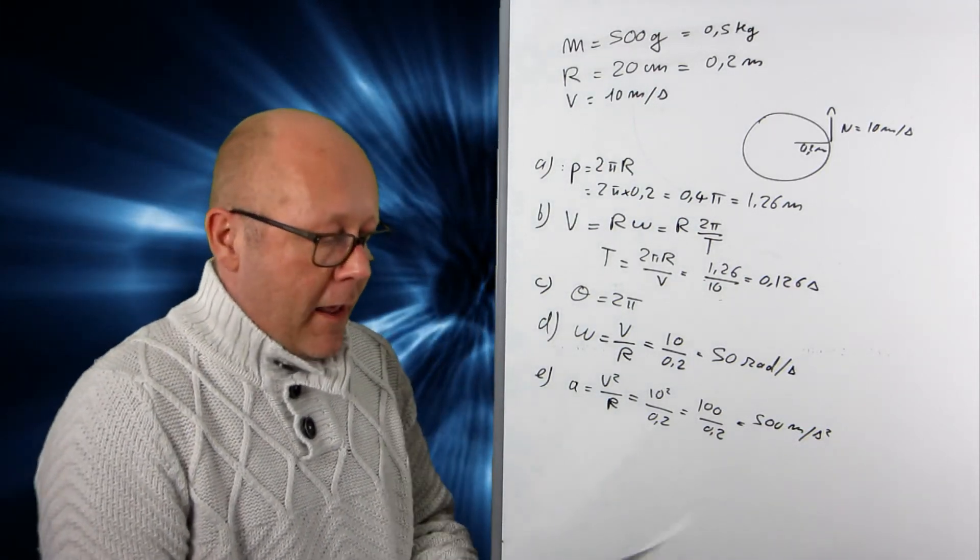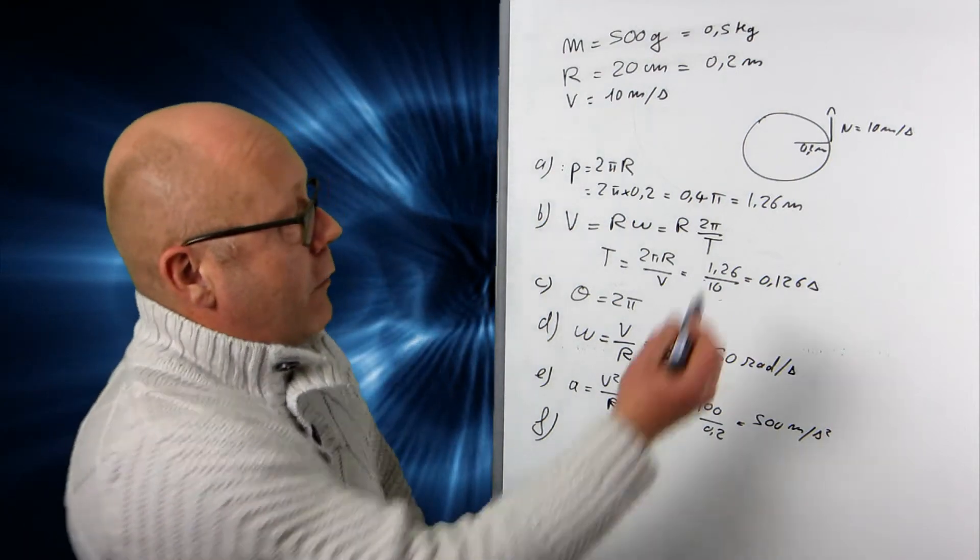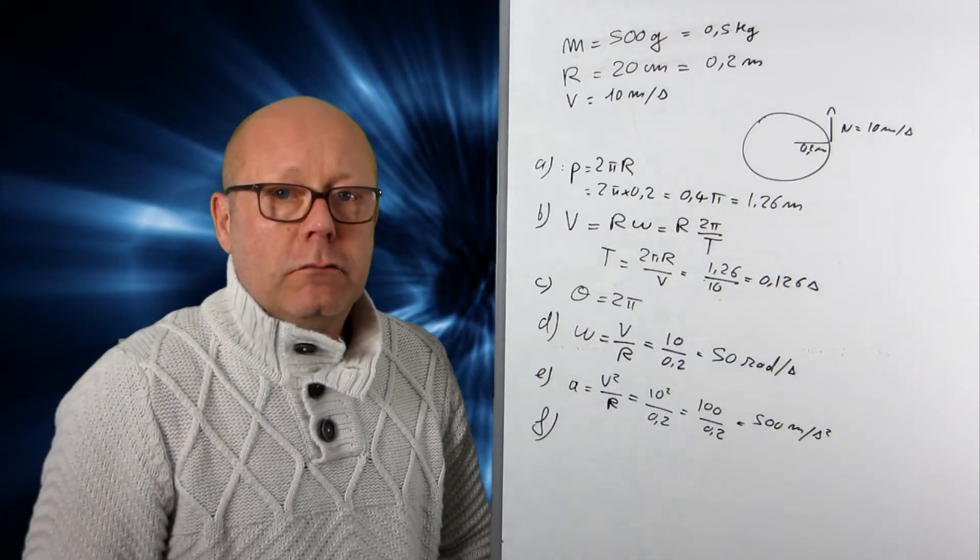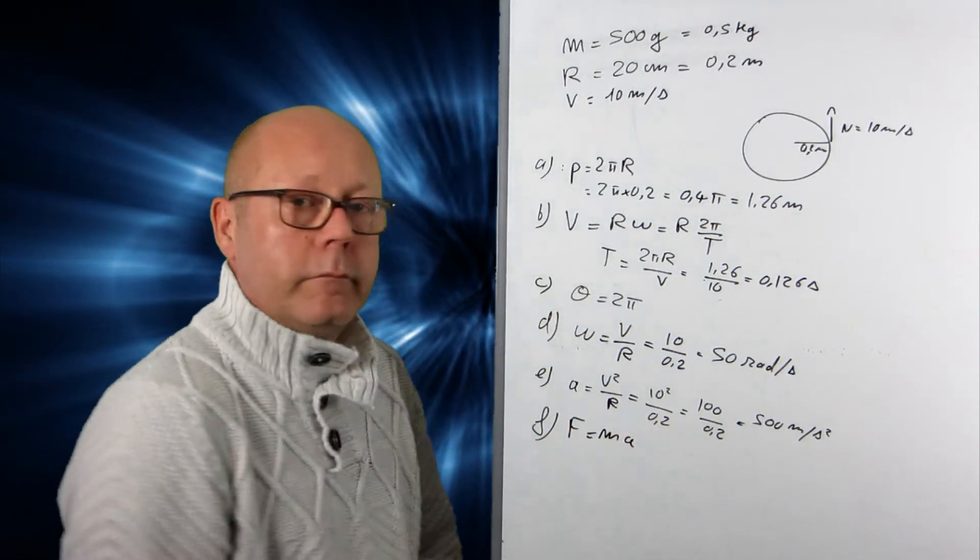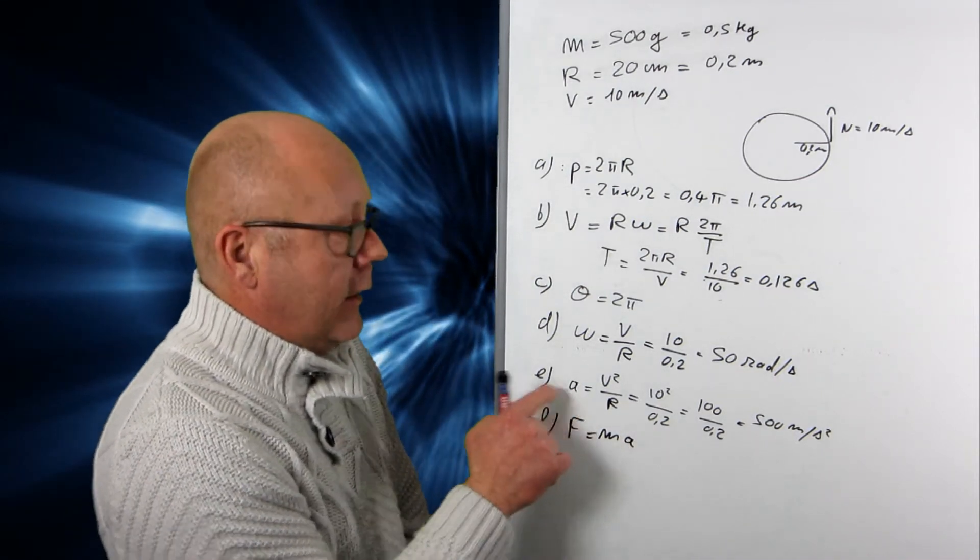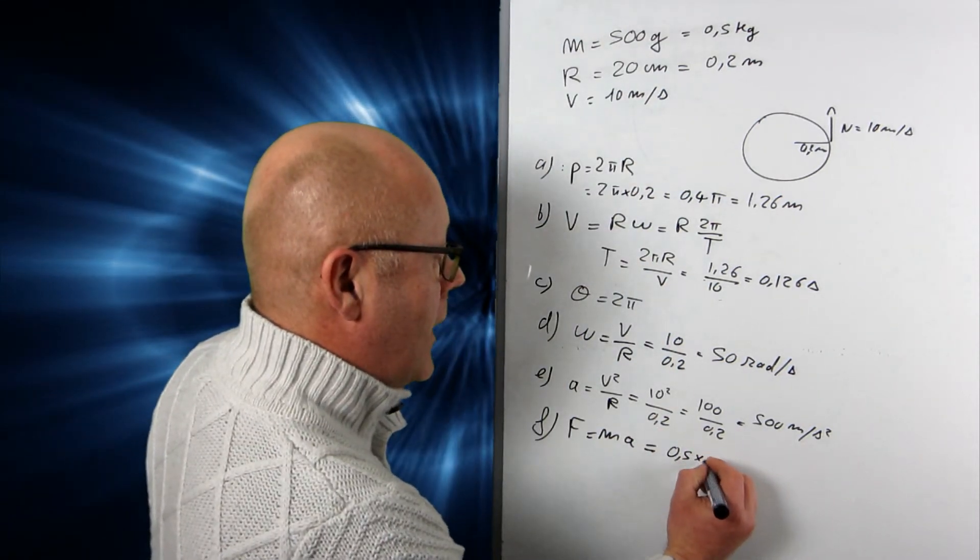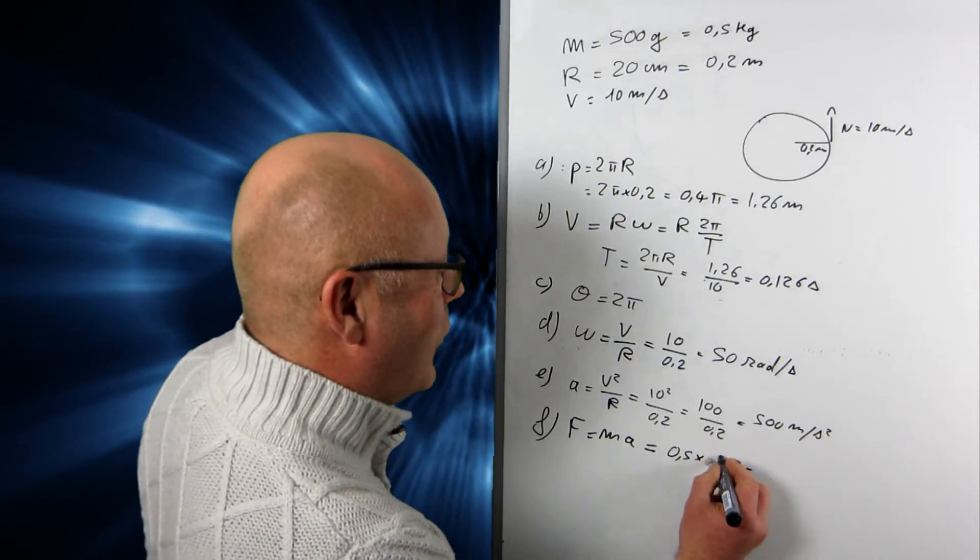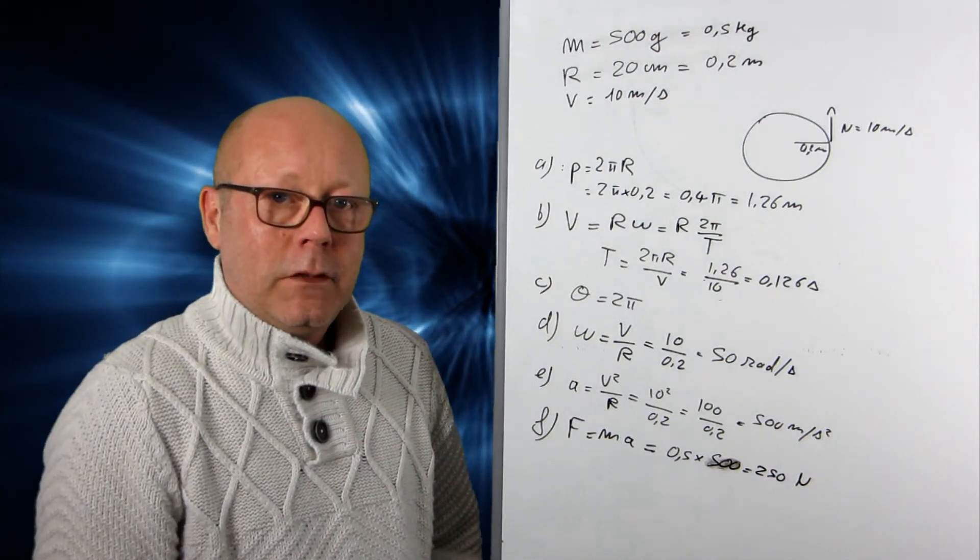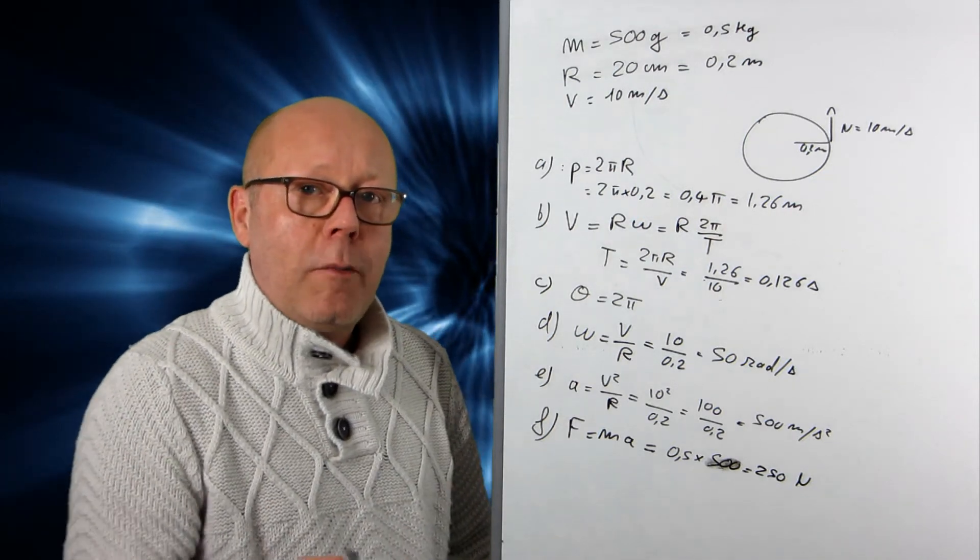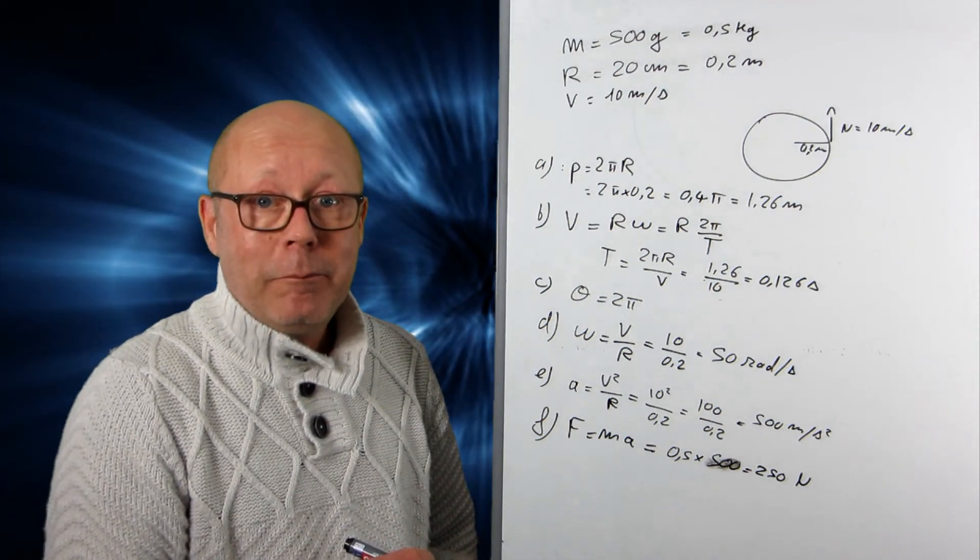And finally, question F. The centripetal force on the body. Well, the force that is causing a circular motion is going to be the net force. So it's going to be F equals ma, where a is the centripetal acceleration. So you just use the mass, 0.5 multiplied by 500, equals 250 newtons. So did you get this right? If not, I encourage you to go back and do it again. Now, exercise 3. Are you ready? Here we go.